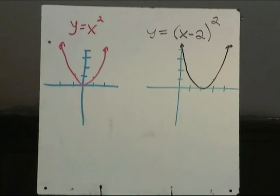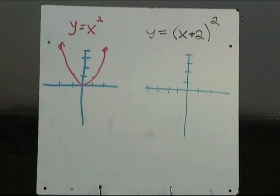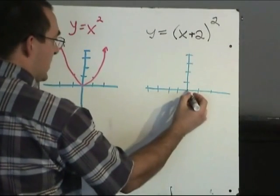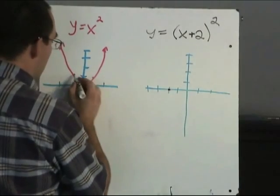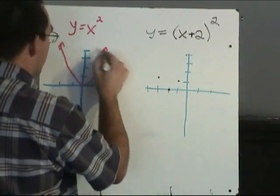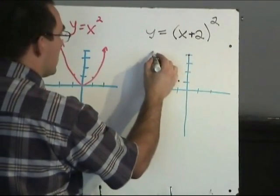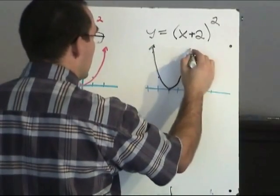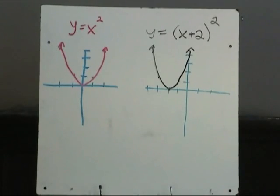And this is true for any function. What will happen now if we replace x with x plus 2? Well, you can probably guess that if replacing x with x minus 2 moved it right 2, then replacing x with x plus 2 will move it left 2. And if you put that function in your graphing calculator, you will indeed see that each point gets moved left 2.